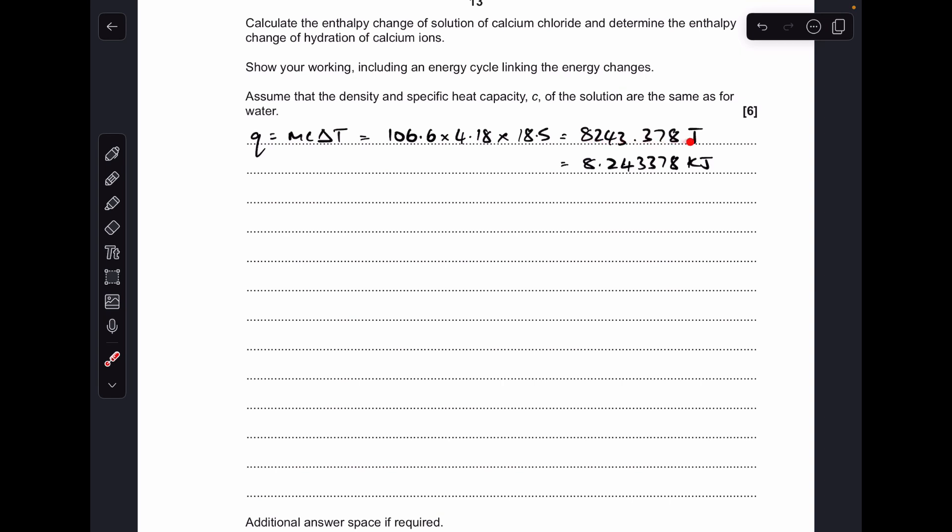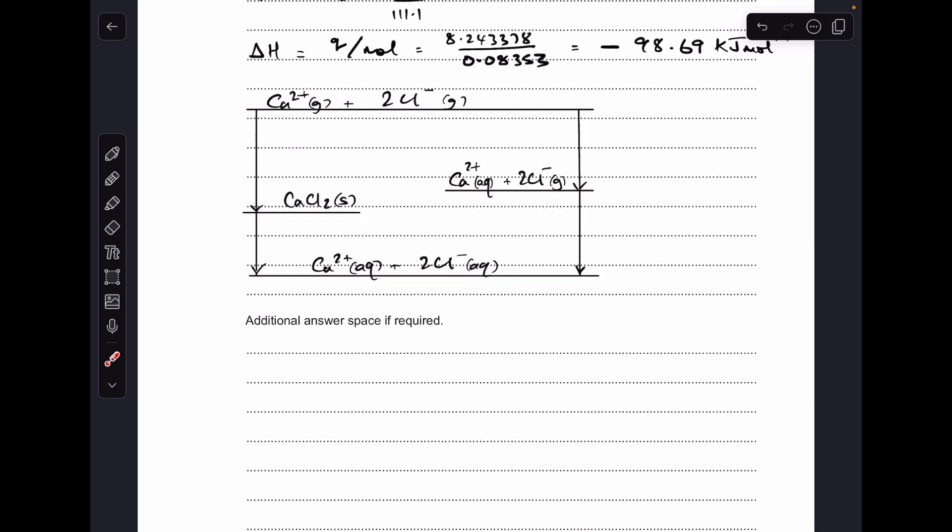And there's that temperature rise, so that gives that many joules but we need to put it into kilojoules. Next thing we'll do is work out the moles of calcium chloride dissolved, so that's the mass over the MR, so that many moles were dissolved. And the enthalpy change of solution is the Q in kilojoules divided by the moles.